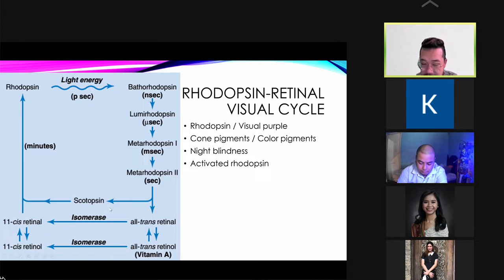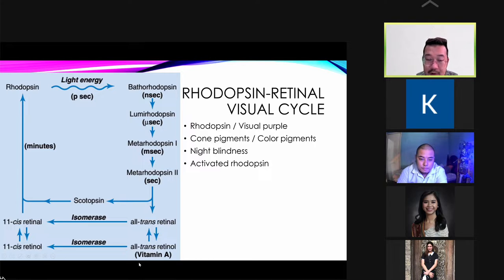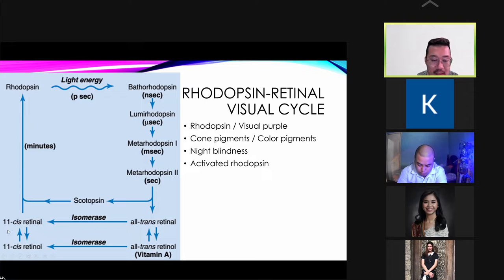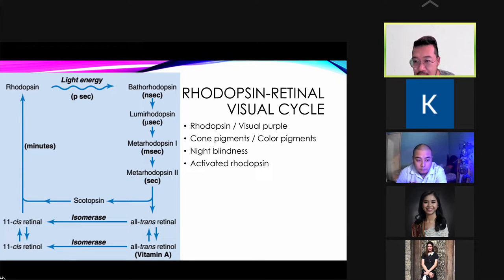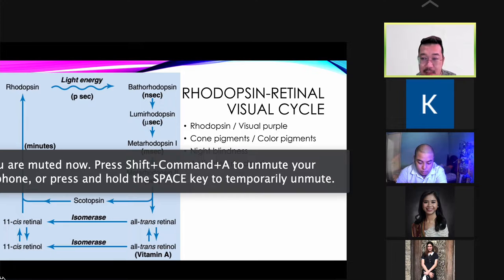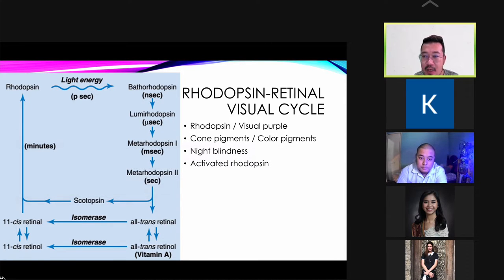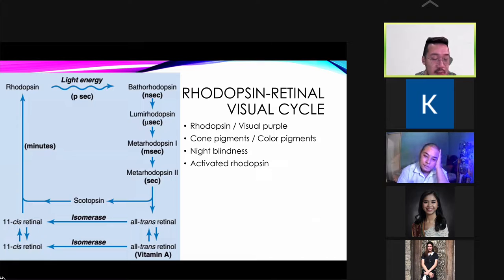Vitamin A provides a continuous supply of retinol, which is crucial for night vision. Because all-trans retinol can become all-trans retinol — a form of vitamin A — enough supply of vitamin A ensures continuous dark adaptation. Without vitamin A, you cannot have continuous dark adaptation; your rhodopsin cannot continuously undergo night adaptation, and you will have blurred vision in the dark.